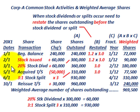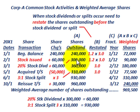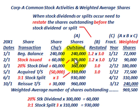On March 1st we have a 20% stock dividend. The calculation takes the shares outstanding prior to the dividend — 300,000 — times 20%, giving us 60,000 additional shares. So 300,000 plus 60,000 gives us 360,000 shares outstanding.